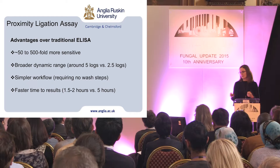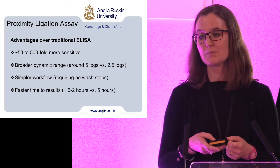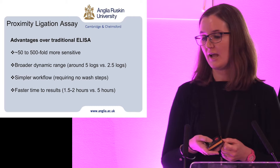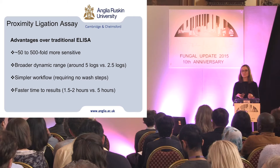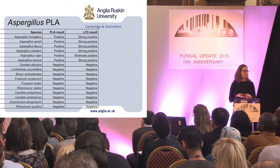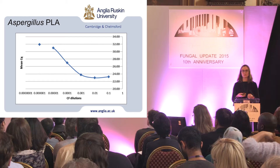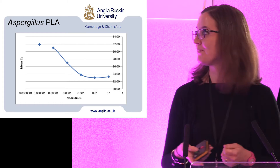We're using the proximity ligation assay, which has several advantages over traditional ELISA: 50 to 500-fold greater sensitivity, a broader dynamic range of around 5 log versus 2.5 log, a much simpler workflow with no wash steps, hands-on time of less than 20 minutes, and a faster time to result of around two hours versus three to five hours for ELISA. We challenged our aspergillus PLA with a whole array of clinically relevant fungi and found it was specific for aspergillus, comparing favorably with the lateral flow device.